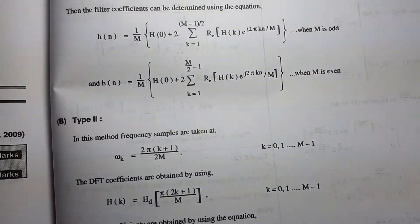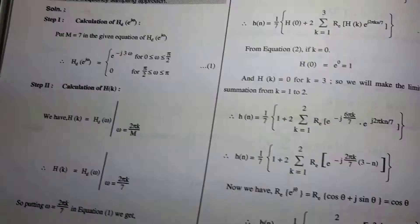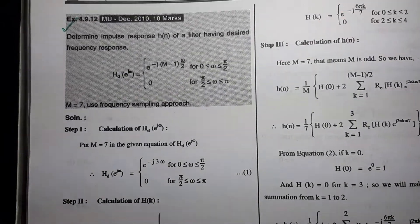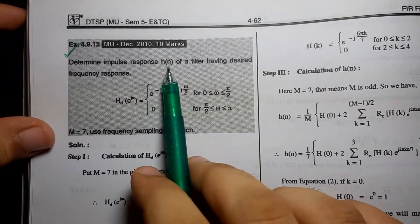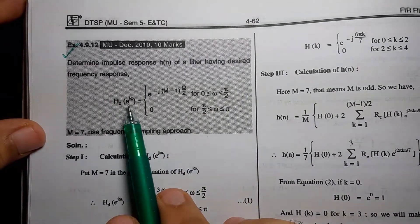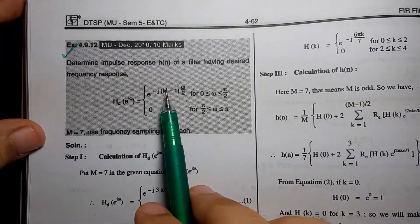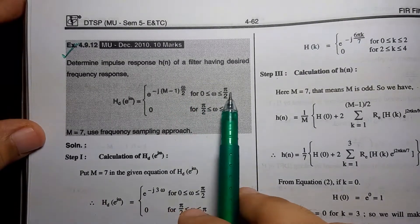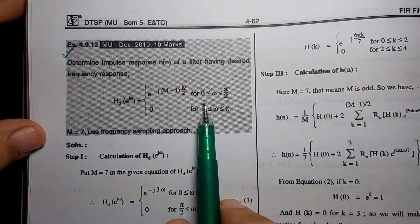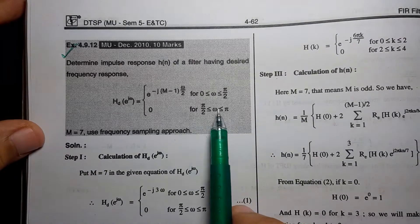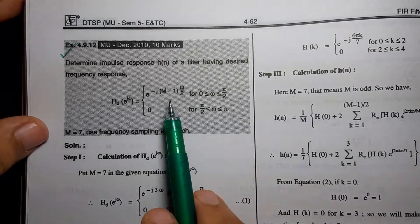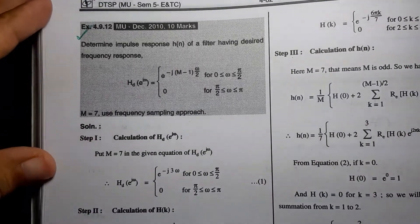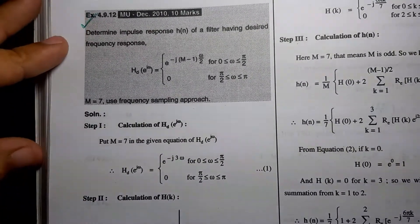Now let us take up some numericals so it becomes easier to understand. The question is: determine the impulse response h(n) for a filter having desired frequency response HD(e^jω) = e^(−j(M−1)ω/2) for 0 ≤ ω ≤ π/2, and 0 for π/2 ≤ ω ≤ π. So when ω is between π/2 to π there is no impulse response, but when ω lies between 0 to π/2 there is a response. M is given as 7 and we use the frequency sampling approach.